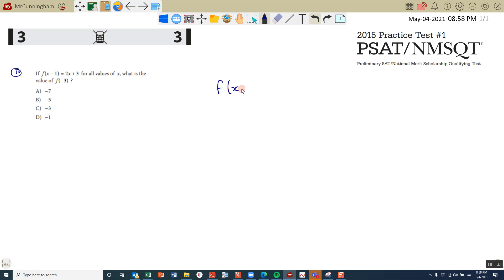I've got f of x minus 1 is equal to 2x plus 3, and I need to find the value of f of negative 3. Now if this was f of x, I would just sub in negative 3 into this, but it's f of x minus 1. So I need to look at in here and think: what value of x makes this negative 3? What value of x makes all of this negative 3?